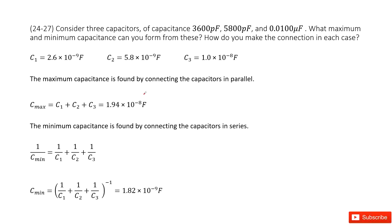We have three capacitors: C1, C2, and C3. Their capacitance is given, so we can write it there. Now, what is the maximum and minimum capacitance you can form from these three capacitors?